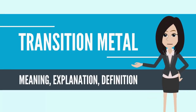Transition Metal. In chemistry, the term transition metal or transition element has three possible meanings. The IUPAC definition defines a transition metal as an element whose atom has a partially filled D subshell, or which can give rise to cations with an incomplete D subshell.